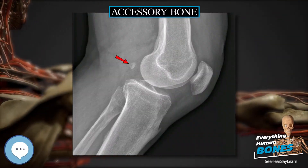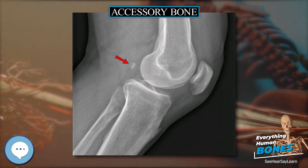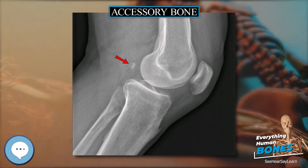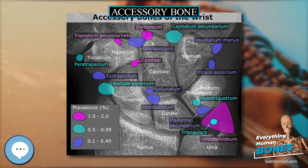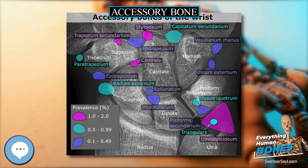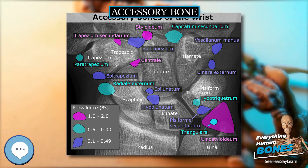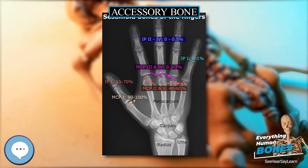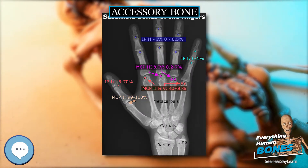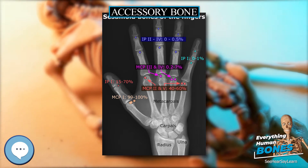An accessory bone, or supernumerary bone, is a bone that is not normally present in the body but can be found as a variant in a significant number of people. They pose the risk of being misdiagnosed as bone fractures on radiography.